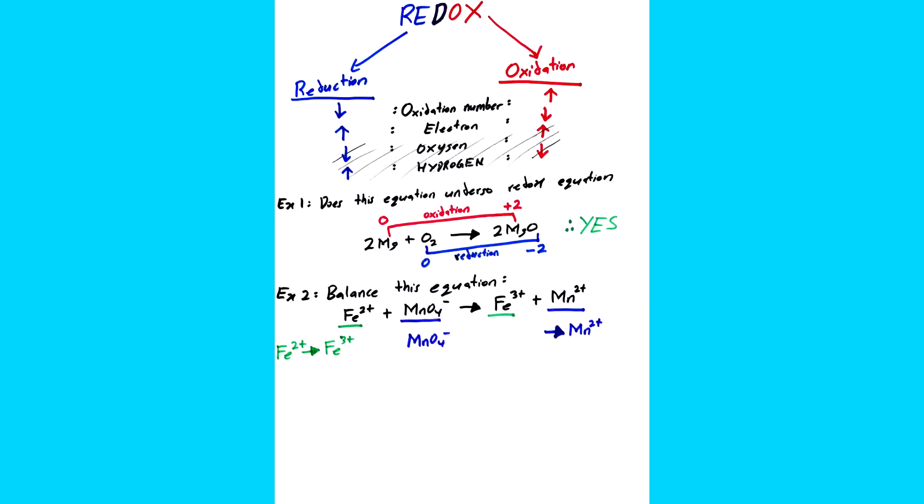Next, look at the Fe2+, and Fe3+, at the left. We can see that the charges are not balanced. So in order to balance it, we add one electron at the right so that now both the left and right charges are plus 2. And for MnO4, things are a bit messy.